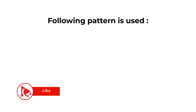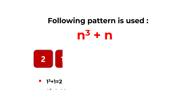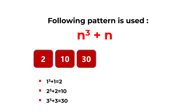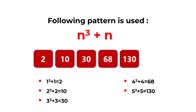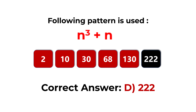To determine the answer in this case we need to use the pattern n³ + n. The first number is calculated as 1³ + 1 = 2. The next as 2³ + 2 = 10. Then 3³ + 3 = 30, then 4³ + 4 = 68, then 5³ + 5 = 130. This means the missing number is 6³ + 6 = 222. So the correct answer here is choice D, 222.